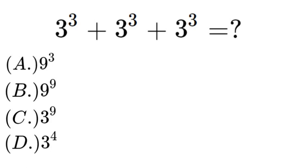Let's work through number A first. So 9 to the power of 3 would be rewritten as 3 plus 3 plus 3 all to the power of 3 which again equals 9 to the power of 3, which is not what we are looking for.